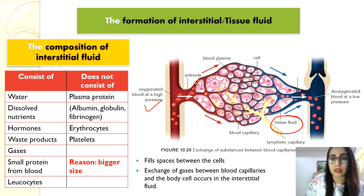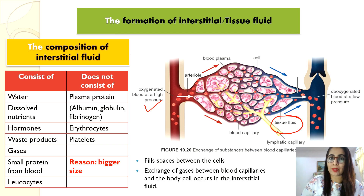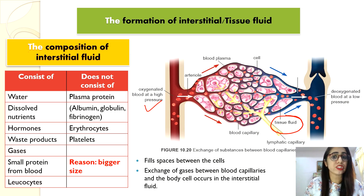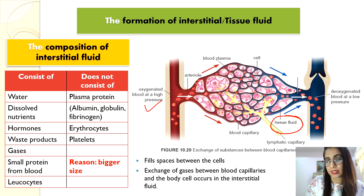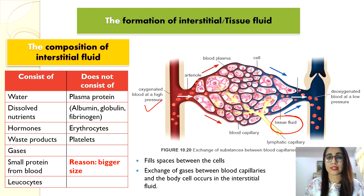The capillary wall is permeable to most plasma components, for example water, gases, digested food substances, hormones, and ions, except plasma protein, red blood cells, and platelets. Red blood cells are too large to cross the capillary walls, but leukocytes such as phagocytes can change their shape and pass through the tiny pores on the capillary wall to enter the spaces between the cells. This tissue fluid flows in the spaces between the cells.